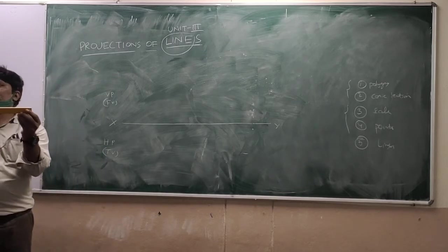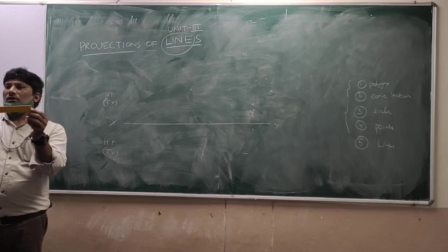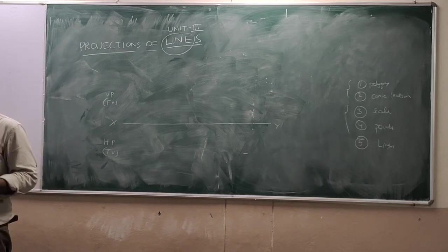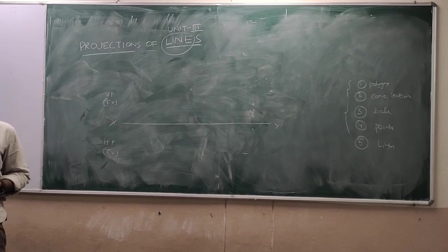So what is the length of the line? 50mm long. So where is the line lying? Lying in VP. How much above HP? 45. How much in front of HP? Zero. Zero in front.